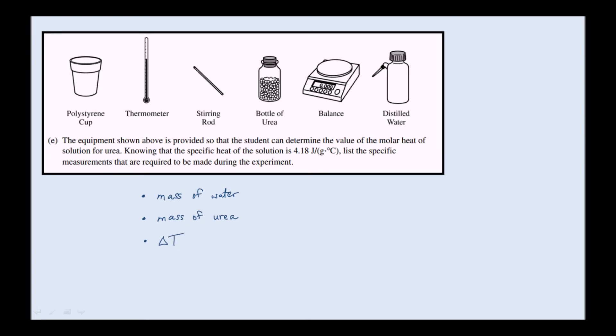And then we need the delta T, the temperature change, but that's broken into two different bits of information. We need the T initial and T final. The initial temperature is the temp of the water alone, because we haven't added any urea. And then the final temperature is the temp of the urea-water solution, because we've added the urea to the water.